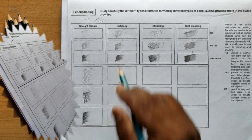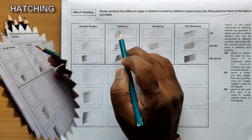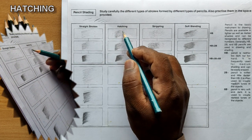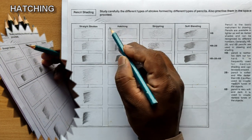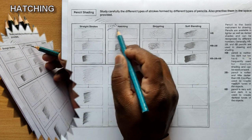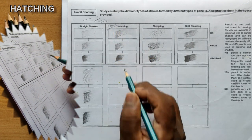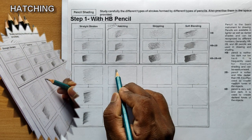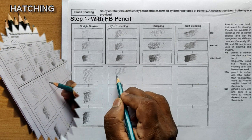The next method is hatching. Hatching uses only single lines, whereas when we do lines in the opposite direction it is called cross-hatching. Let us learn both pencil shading methods — hatching and cross-hatching. Using an HB pencil, give some lines like this; you use lines instead of strokes.